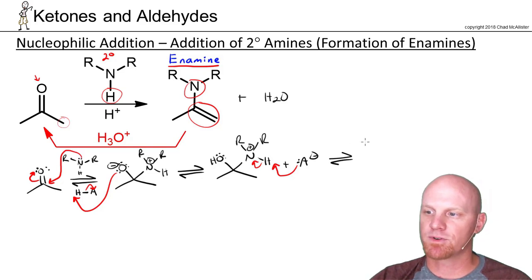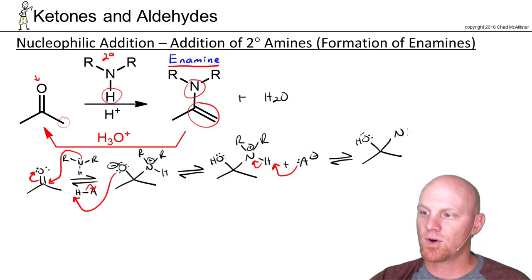And again every step in this mechanism is reversible, just like it was with primary amines and imine formation. In this case then we've got our alcohol right here and now our amine right here with only two R groups. It doesn't have any hydrogens left.